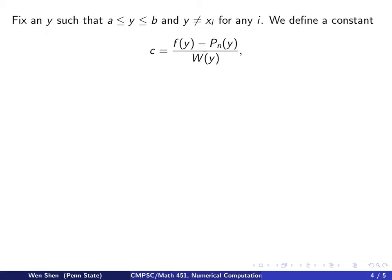Fix a y such that y lies on the interval between a and b, and y does not equal to any of the interpolating points. Then we define a constant c as [f(y) - Pn(y)]/W(y). We need to define one more function, φ(x), which is f(x) - Pn(x) - c·W(x). So the c we just defined up here. In this argument, y is a fixed number, so c is a constant. And for this φ, x is the variable.